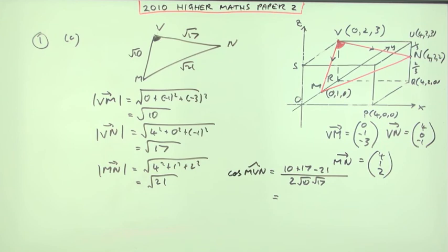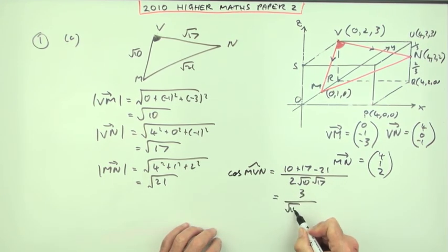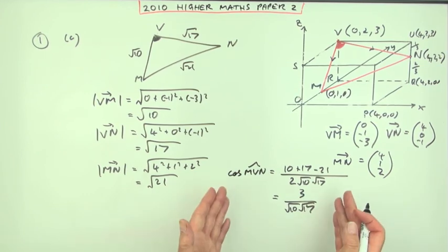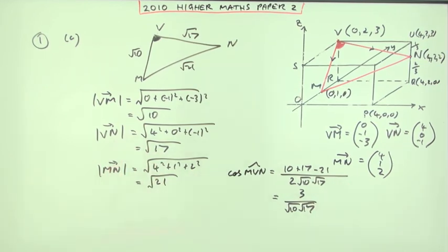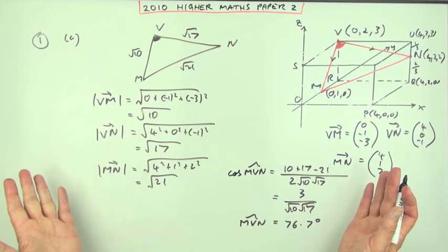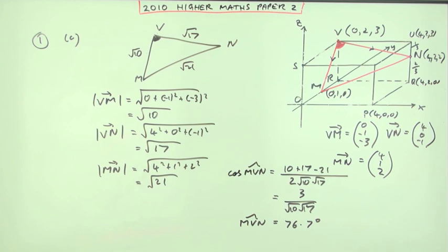And notice what's going to happen with this cosine rule. 10 and 17 is 27. Take away 21 is 6. Cancel the 6 with that 2 and you've got a 3. Over root 10, root 17. Look familiar? Exactly the same as you had when you used the scalar product. So, same answer then. The angle MVN will be 76.7. It was allowed in the marking scheme, and so it should be because it's a perfectly valid technique. There was no mention of using the scale drawing low in the marking scheme.